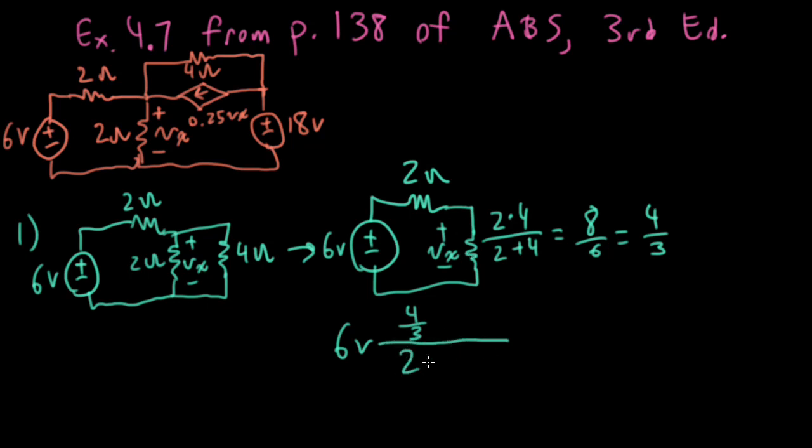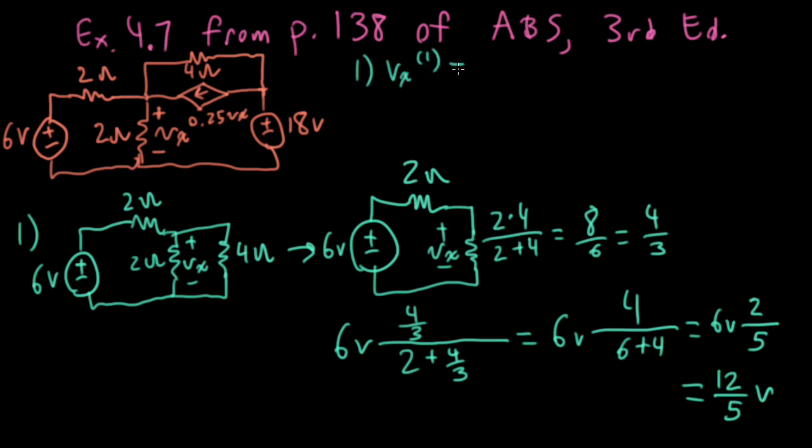This is kind of annoying let me write this as 6 volt times 4 over 6 plus 4 so let's see that's 6 volt and that'll be 4 over 10 which is 2 over 5 so this would be 12 over 5 volt and actually let me write the result up here I'll write VX with a little one superscript as 12 over 5 volt.